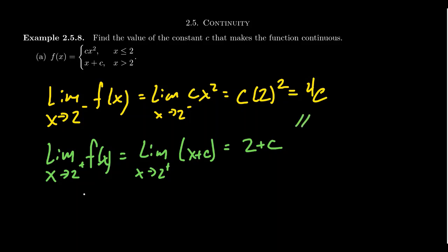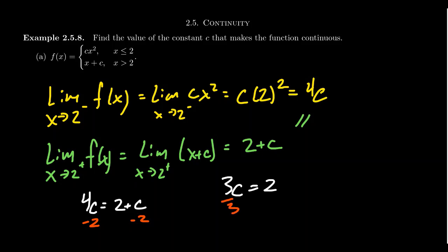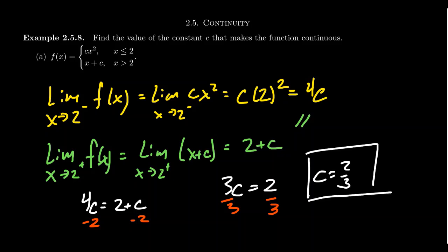So what we have to do is equate these things together. We have the equation 4c equals 2 plus c, and we solve for the parameter c. Subtracting c from both sides gives 3c equals 2, then dividing both sides by three gives us c equals two-thirds. So if we set this coefficient c to be two-thirds, we get that the function is in fact continuous.